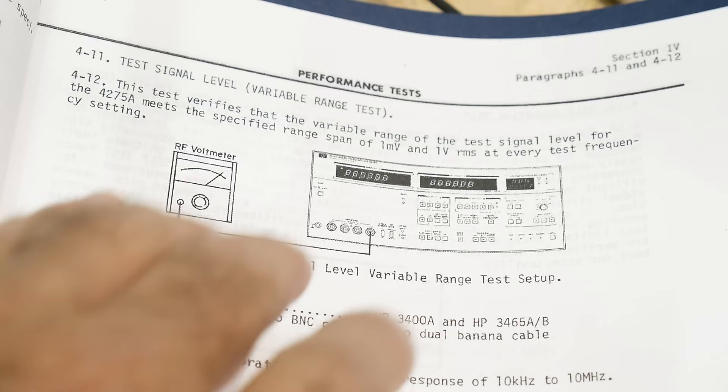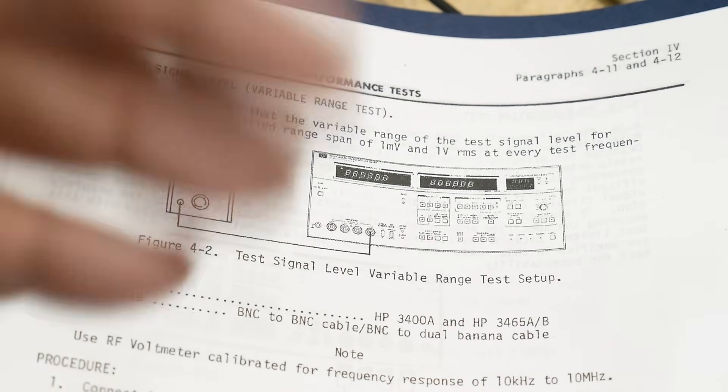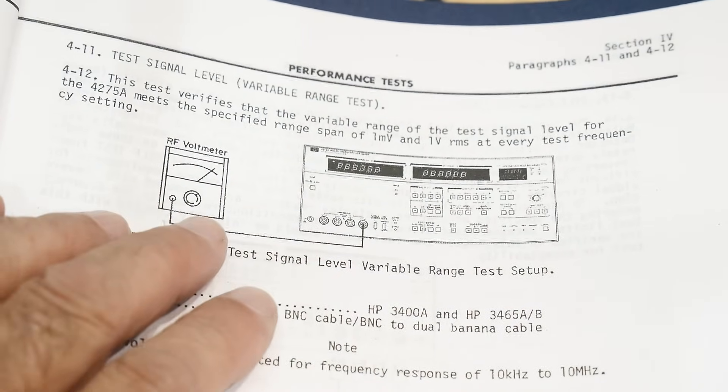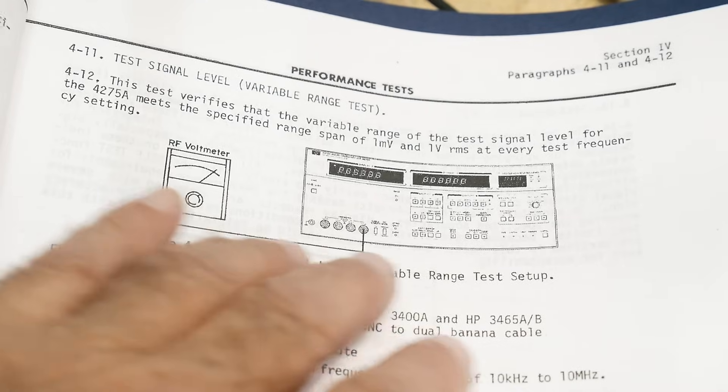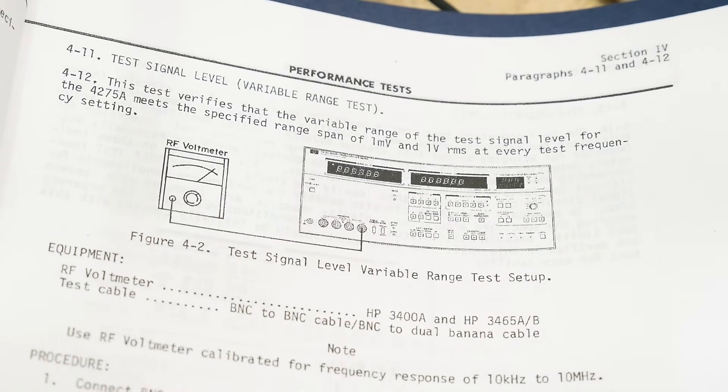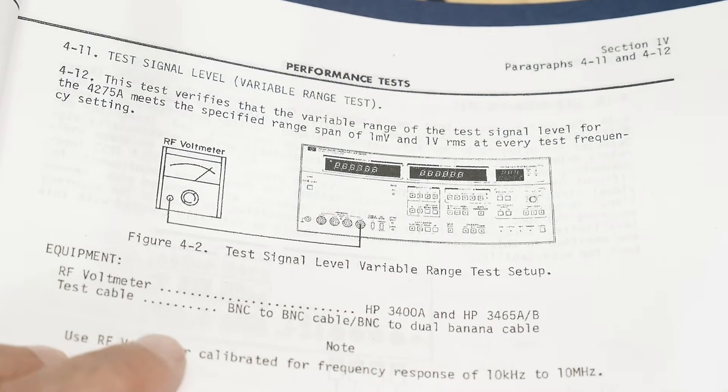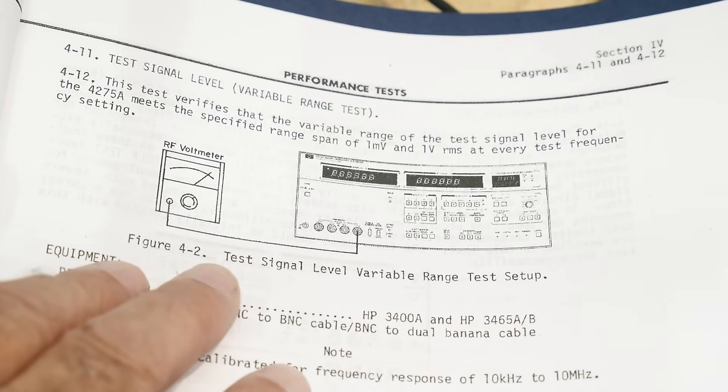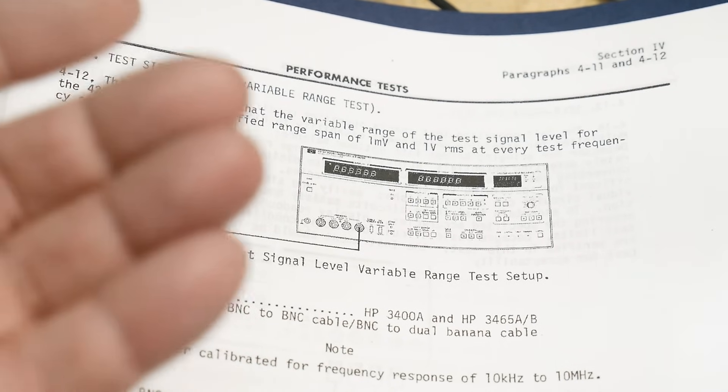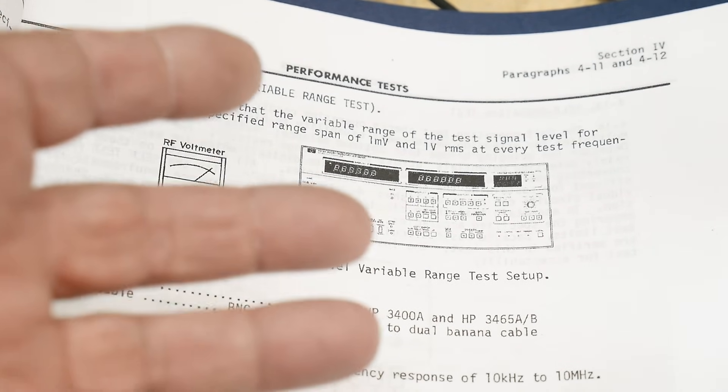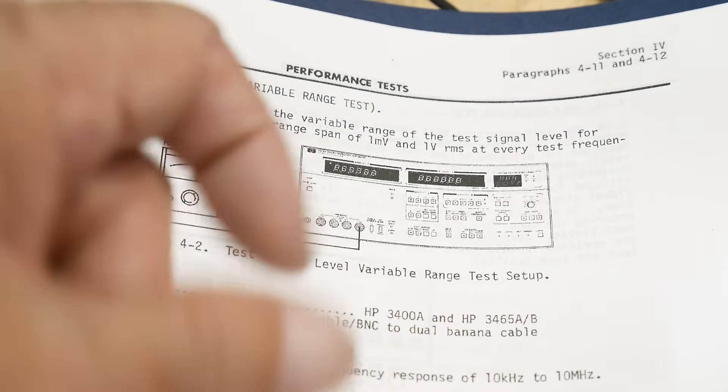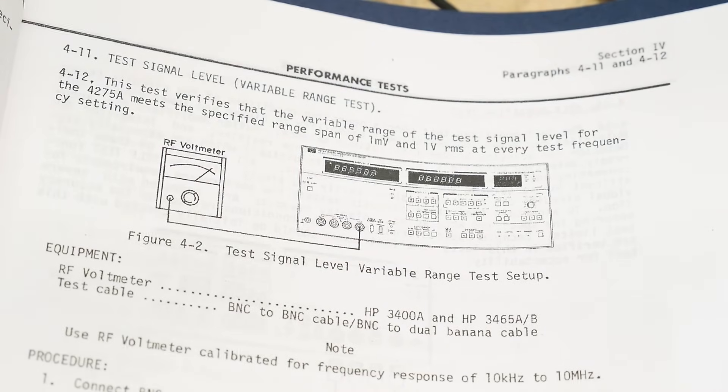The next test is, is it outputting the voltage that you want? It has three different ranges, and it has a knob that you can turn to set the output voltage of the signal. This is a vector voltmeter, so you want to output a known frequency and output a known voltage, and then it can do its math.